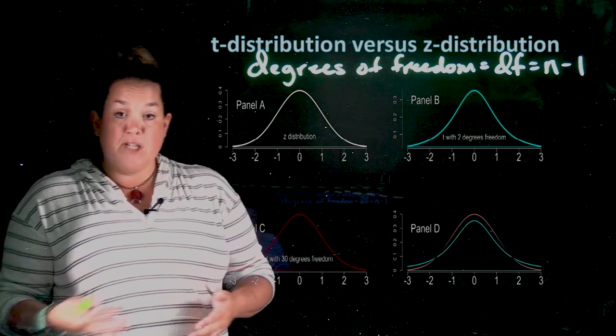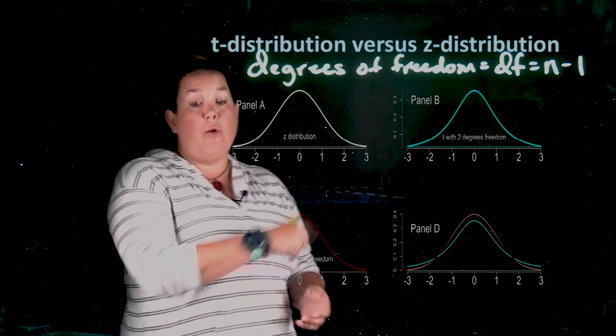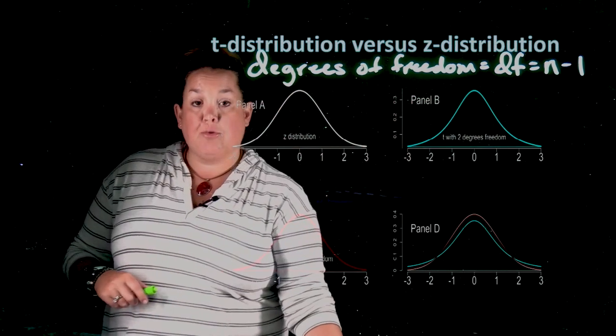So the larger the sample size, or the larger the degrees of freedom, the closer it will be to the actual z-distribution.